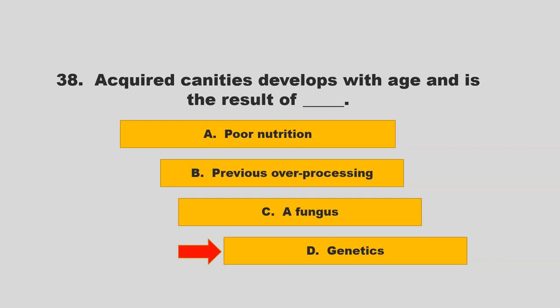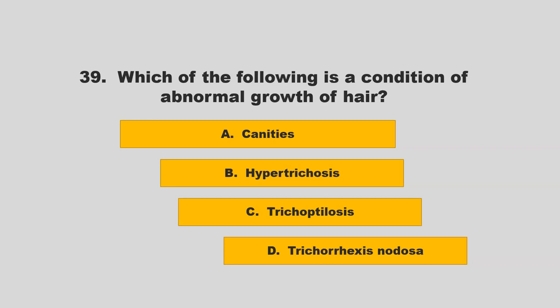Which of the following is a condition of abnormal growth of hair? Is it canities, hypertrichosis, trichoptilosis, or trichorrhexis nodosa? If you chose B, hypertrichosis, you are correct.